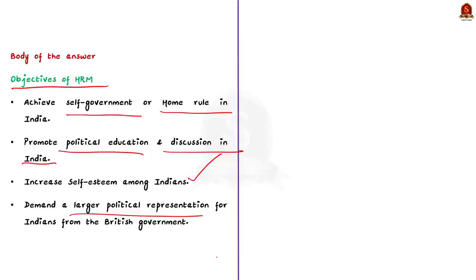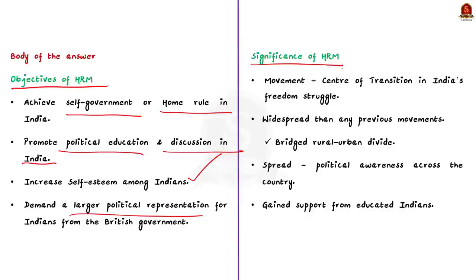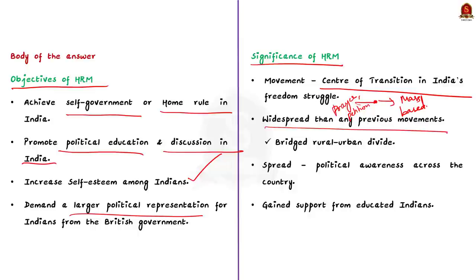Now, after mentioning the objectives, write about the significance of the movement. Firstly, the movement was at the center of a transition in India's freedom struggle — shifting from the prayer-petition-based struggle of the Moderates to the Gandhian phase of broadly mass-based struggle. It shifted the movement towards common people and served as a base for future Gandhian struggles. Secondly, it was more widespread than any previous movement, covering the whole of India through two leagues set up by Tilak and Annie Besant, bridging the rural-urban divide.